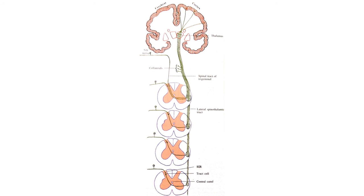If there is an intraspinal tumor — a tumor inside the spinal cord — it will first damage the more medially placed nerves, which are from the upper segments, so upper segment pain sensation will be lost first. If there is an extraspinal tumor, it will damage the more peripherally placed nerves first, so pain sensation from the lower segments will be affected in an extraspinal tumor.